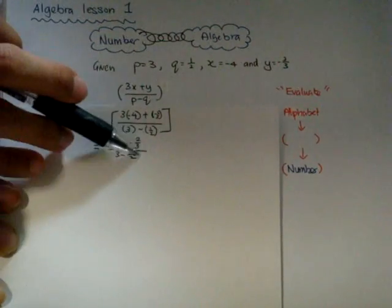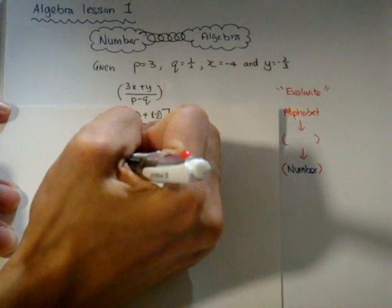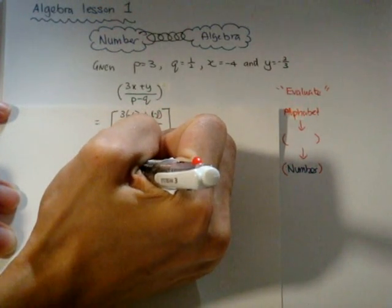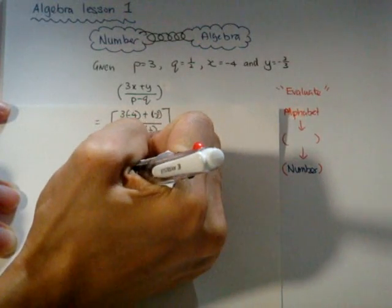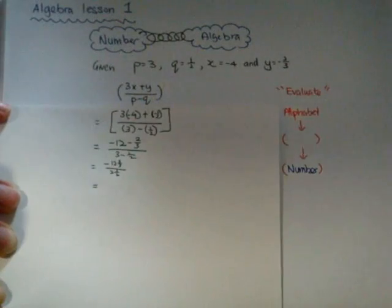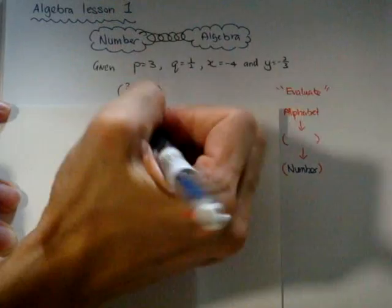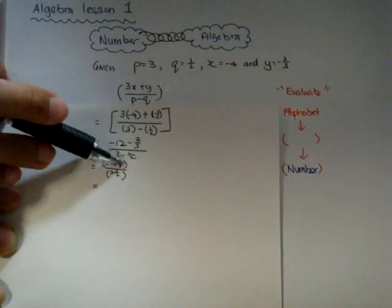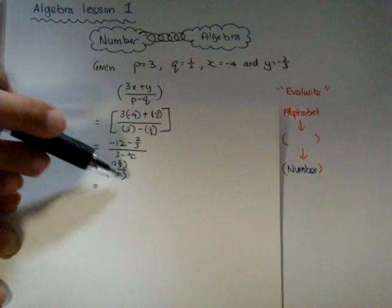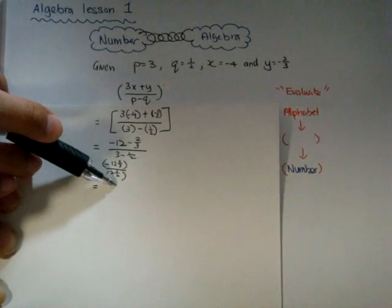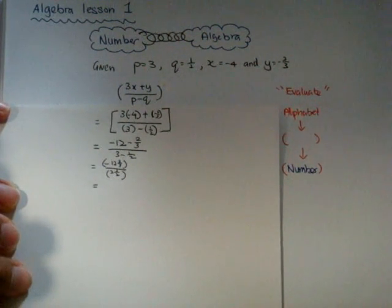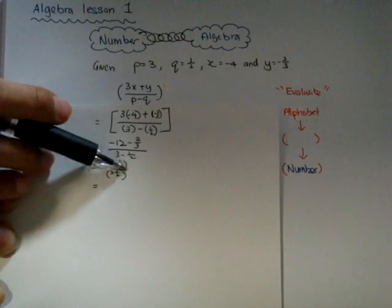After that, combine them together. Put a bracket so that you can see as one whole thing over one whole thing. This also to prevent you to make yourself confused. And after that, turn the mid fraction...